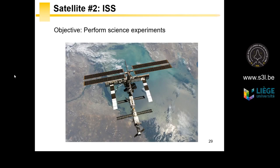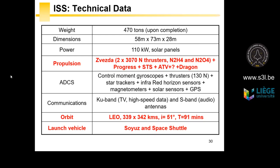Sputnik was a very small satellite, but on the other hand we have the International Space Station, or ISS. The ISS is the product of international cooperation — except China. The objective is to perform scientific experiments. The ISS is massive: 470 tons, with dimensions of 58 by 73 by 28 meters — the size of a football field. Currently astronauts are doing experiments and need a lot of power; at peak, 110,000 watts are collected thanks to the solar panels. The ISS has propulsion: two Zvezda engines or thrusters from the cargo ships that resupply the ISS with food, water, experiments, astronauts, and more.